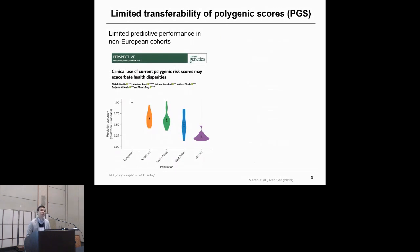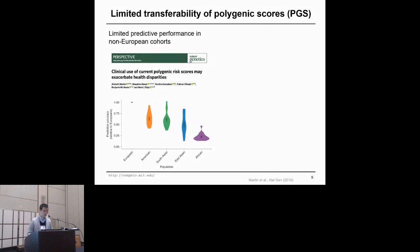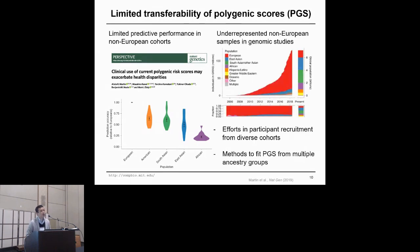However, there is a limitation in current polygenic risk score modeling: generalizability across population groups, especially across ancestry groups. This perspective paper published a couple of years ago clearly highlights this limitation. Specifically, if you train polygenic score models in individuals of European ancestry, the predictive performance does not extend to non-European individuals. The relative performance drops as you move from European ancestry to non-European individuals such as American, South Asian, East Asian, and African populations. This is in part due to the under-representation of non-European individuals in current genotype cohorts.